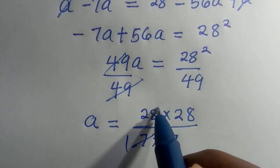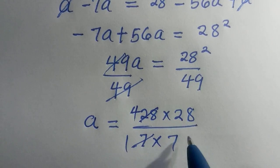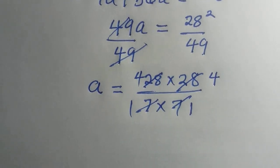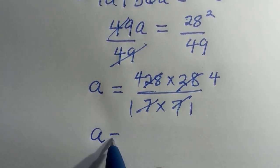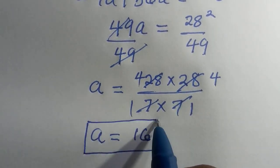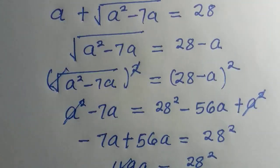So 7 here goes into 28 four times, and 7 here is 4. 7 here 1, 7 here is also 4. When we multiply 4 by 4, we are going to get 16. That is, a = 16 is what satisfies this problem.